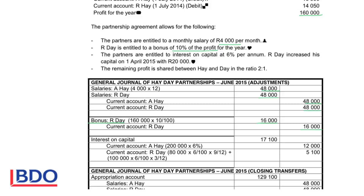The partners are entitled to interest at 6% per annum, so you will look at your capital amount and work out 6% on the capital. The capital of Ai Hai is $200,000 times 6%, so the money that is owed to him and will be taken to the current account is $12,000.